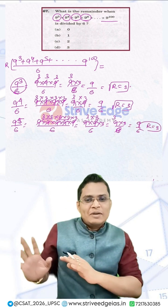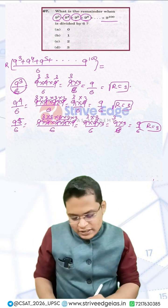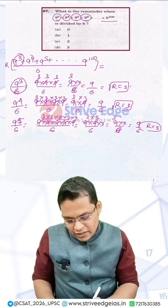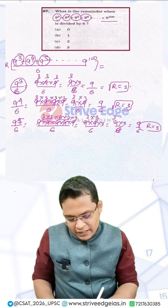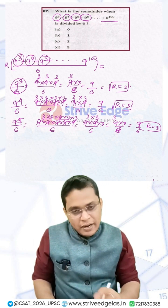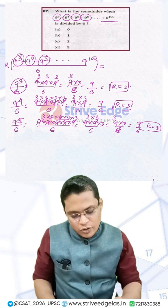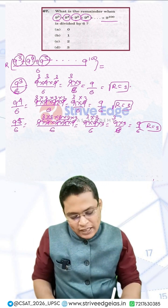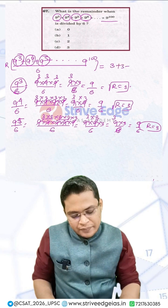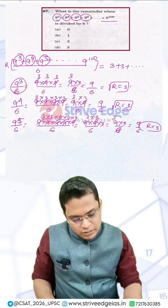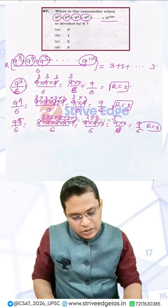That means every single term — 9³, 9⁴, 9⁵, and so on — when divided by 6, always gives a remainder of 3. So the total sum's remainder can be written as 3 + 3 + 3 + ... up to all the terms.